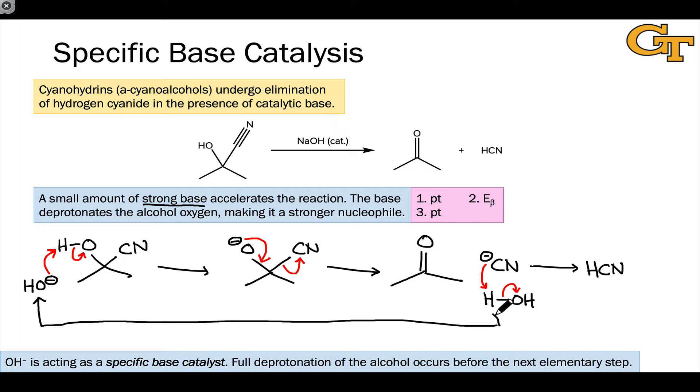So as we saw in the specific acid catalyzed mechanism, here hydroxide is acting as a specific base catalyst because a full or complete proton transfer step occurs. Through that first proton transfer, we generate an anionic intermediate here. This undergoes the business step, here it's a beta elimination, and then a second proton transfer occurs to regenerate the catalyst. Classic specific base catalyzed mechanism here.